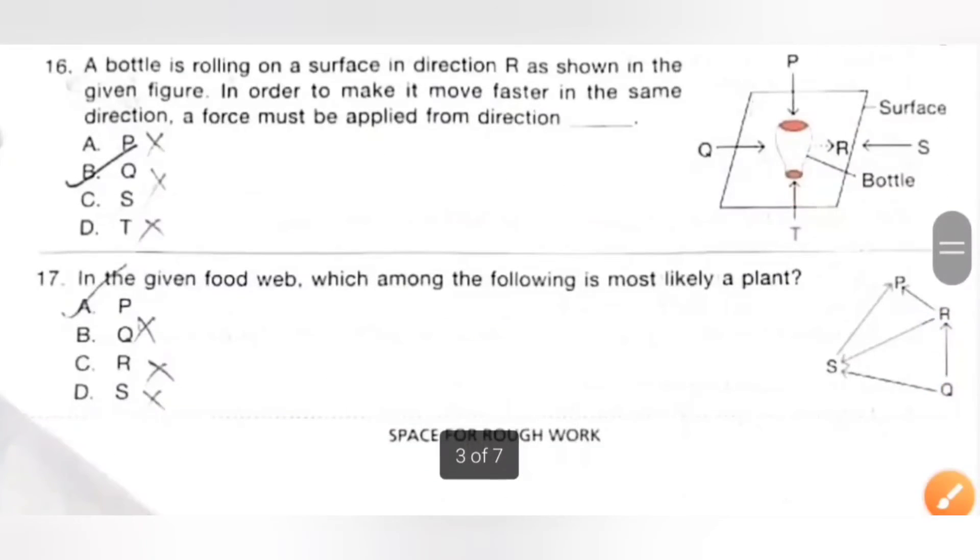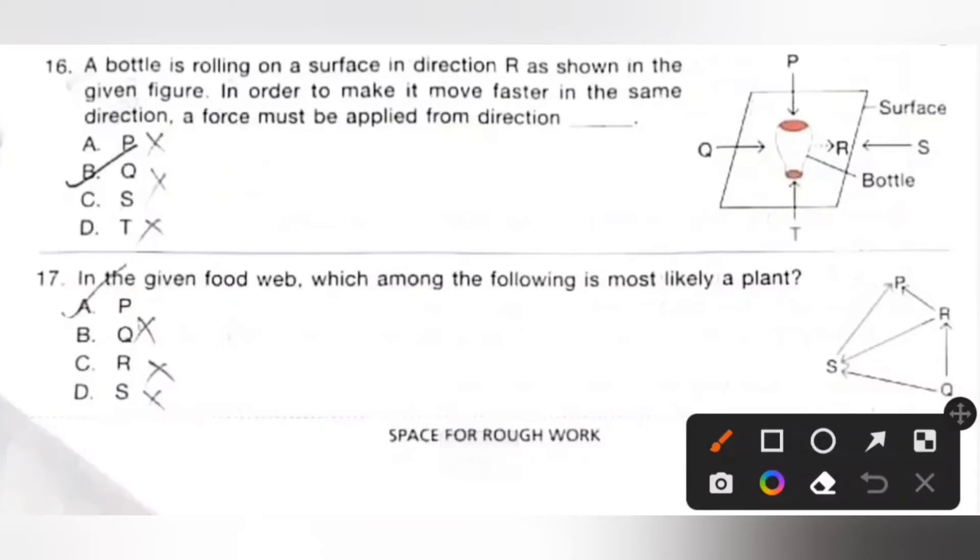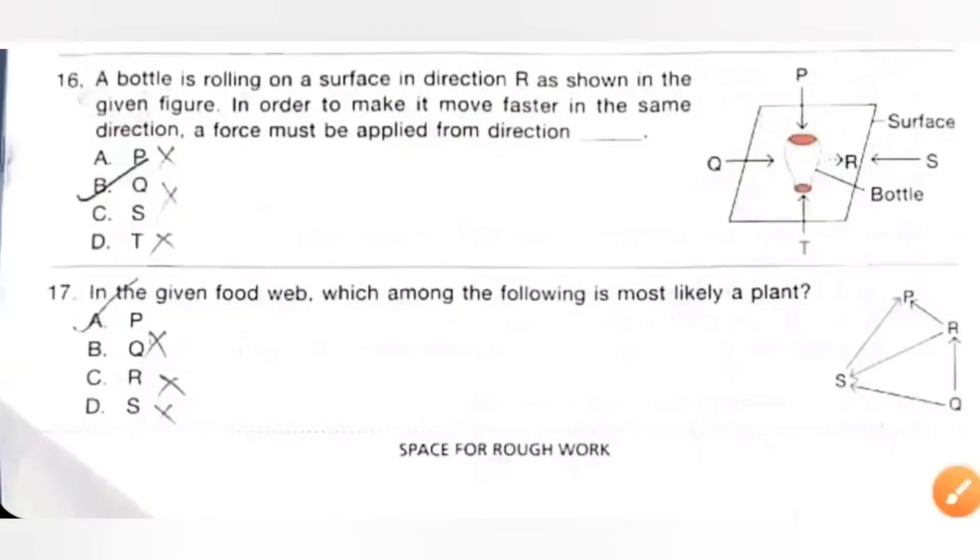Sixteenth: A bottle is rolling on a surface in direction R. As shown in the given figure, in order to make it move faster in the same direction, a force must be applied from direction dash. So we must apply the force in opposite direction, in direction Q. So option B is the correct answer.